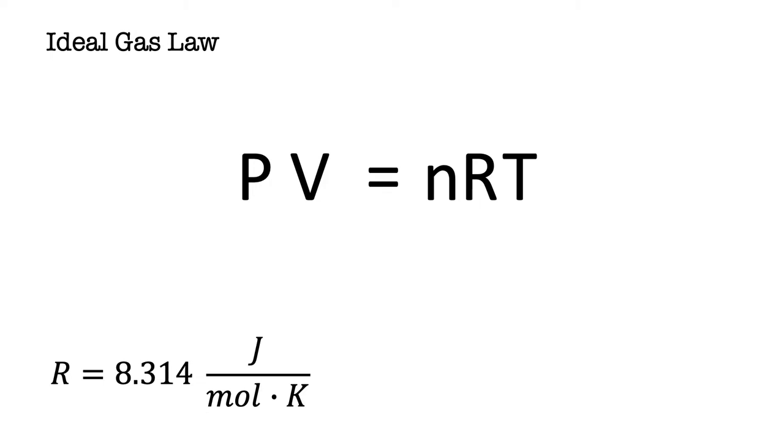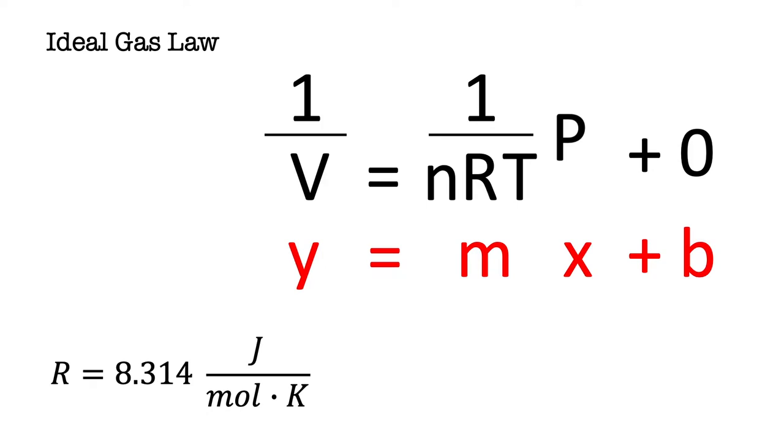For the purposes of this experiment, it is helpful to rewrite the equation like this. Since R is just a constant, if you maintain a fixed number of moles of gas and keep it at a specific temperature, then 1 over nRT is also going to be a constant. So, if I plot 1 over volume of a fixed quantity of gas for a set of different pressures, the data points should fall on a straight line, where the slope of that line is 1 over nRT. In this experiment, we're going to do exactly that.